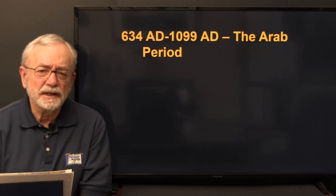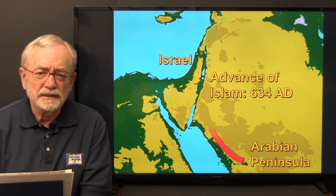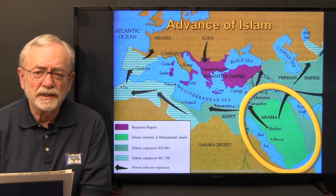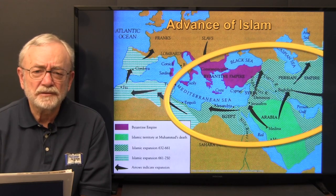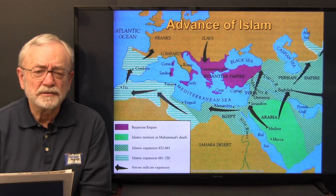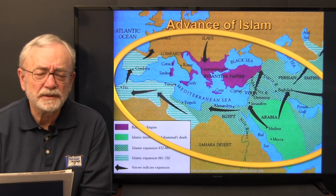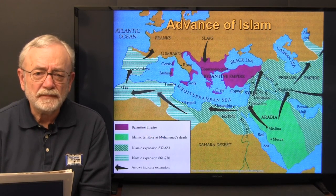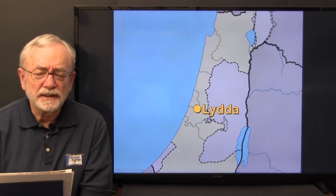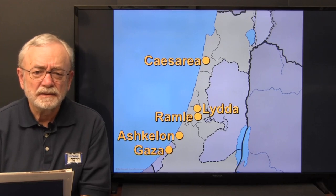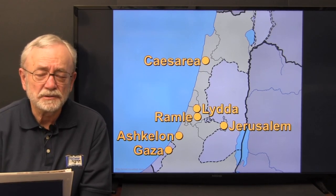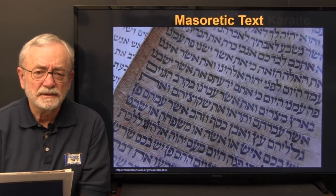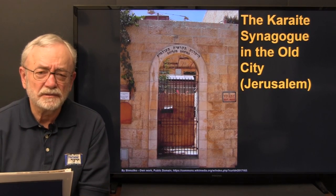From 634 to 1099 was the Arab period. The advance of Islam began in 634 AD out of the Arabian Peninsula, moving east and west, across northern Africa, up into Spain to the borders of France. At that time Jewish people lived in Lydda, Ramla, Ashkelon, Caesarea, Gaza, and Jerusalem — there was continuous Jewish presence in the land. The Masoretic text was developed, and the Karaite branch of Judaism emerged during this period.